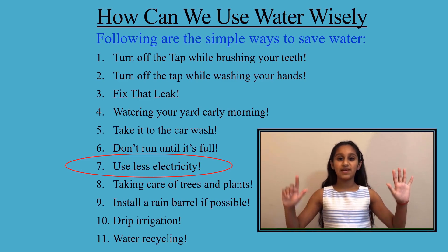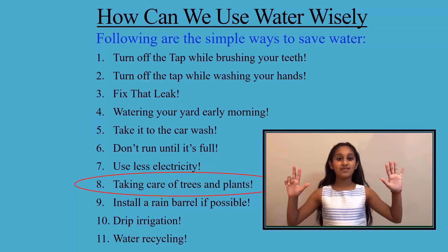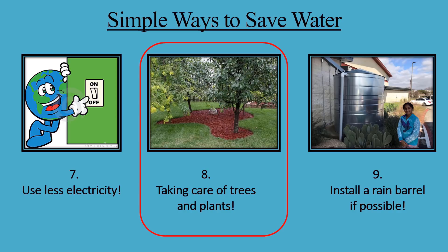Number seven: use less electricity. Power plants use thousands of gallons of water for cooling. Do your part to conserve power and you're indirectly saving water too. Number eight: take care of trees and plants. It's a good idea to put layers of mulch around trees and plants to reduce evaporation and keep the soil cool. Organic mulch also improves the soil and prevents weeds.